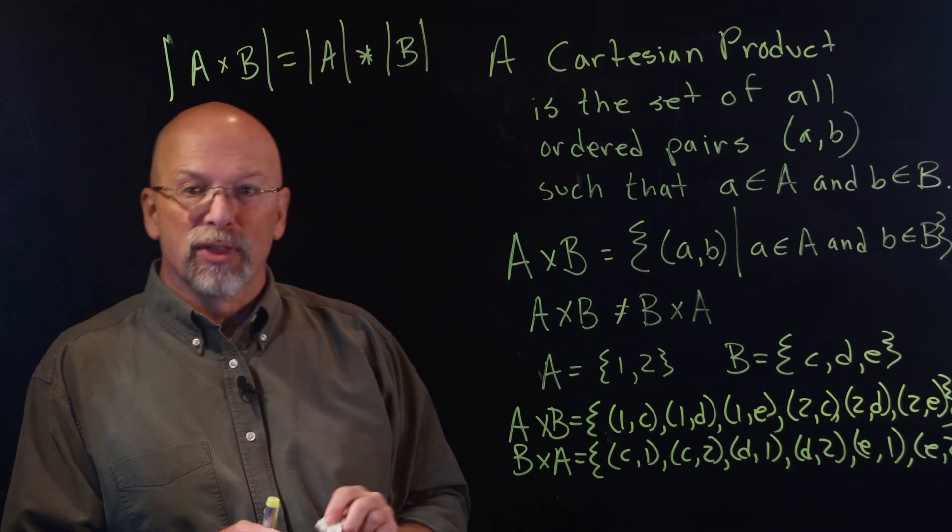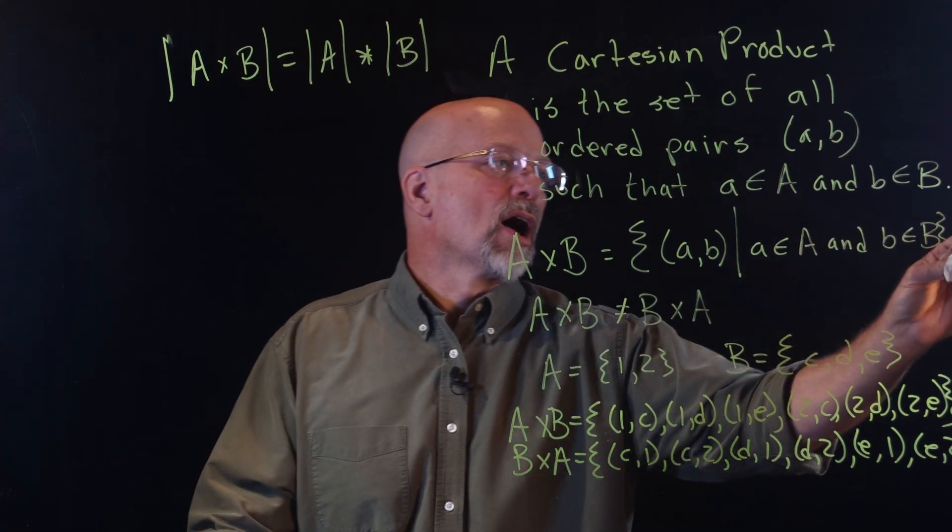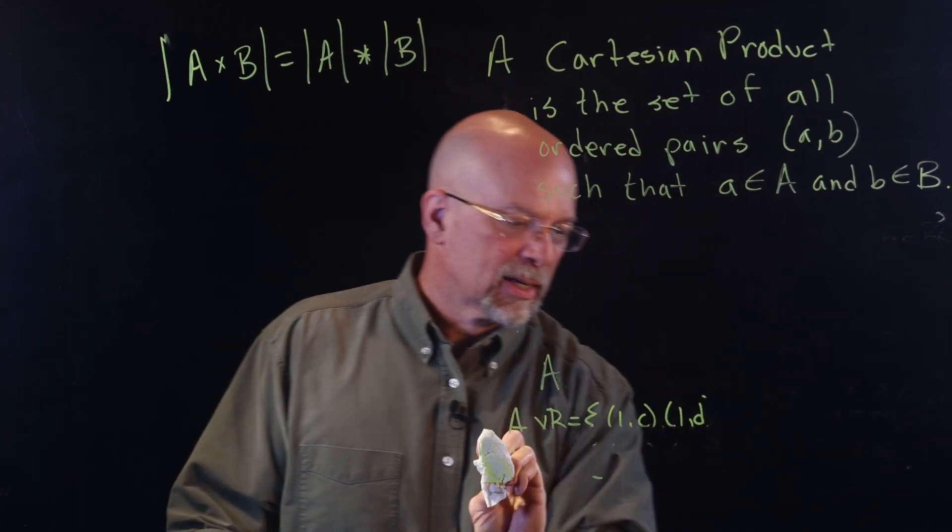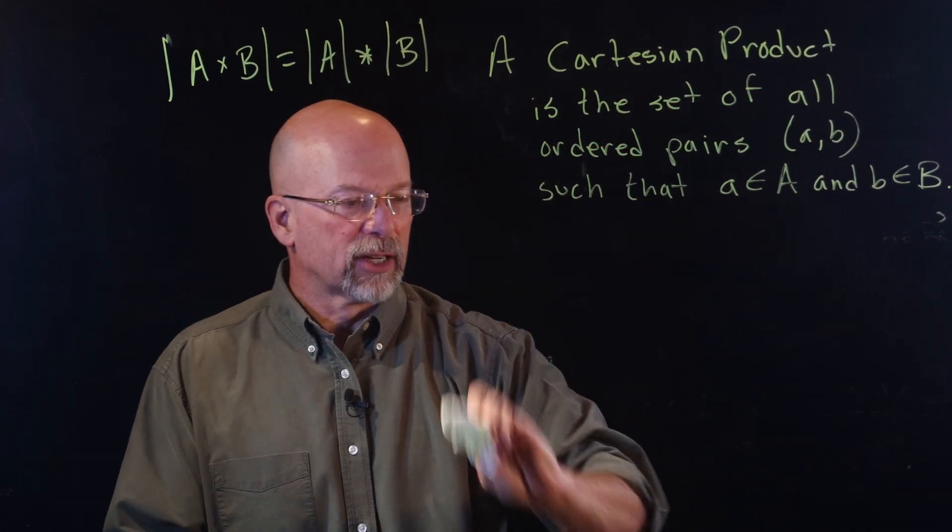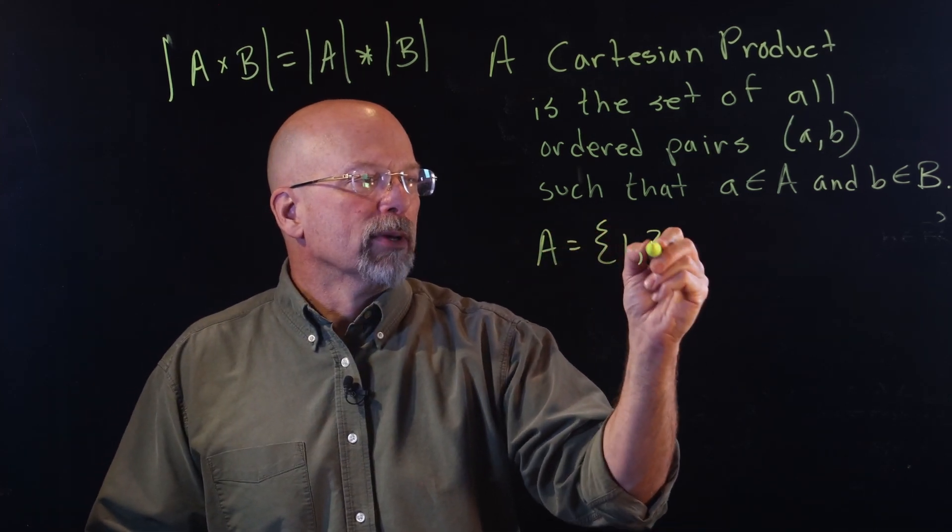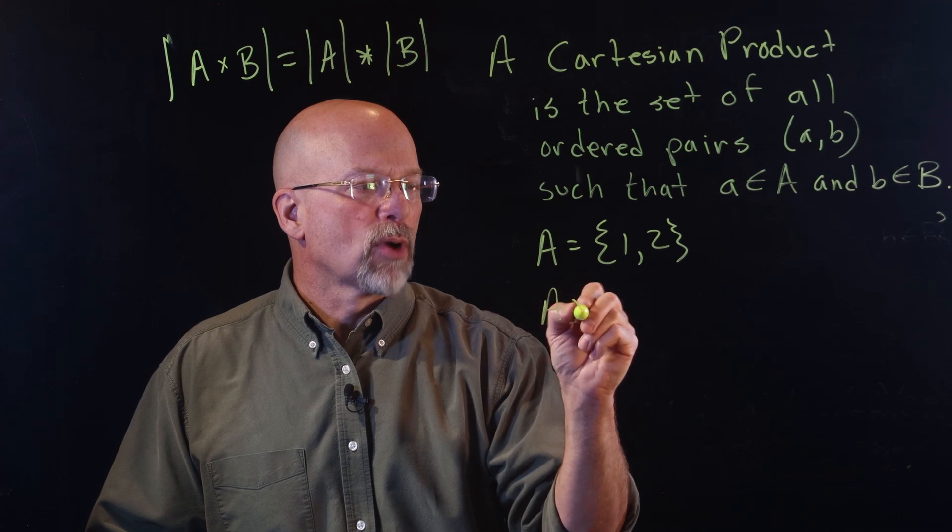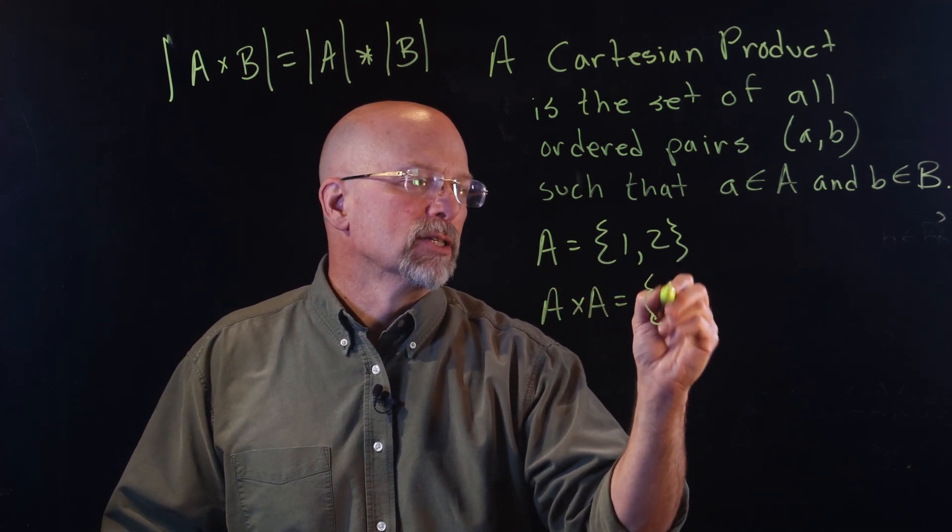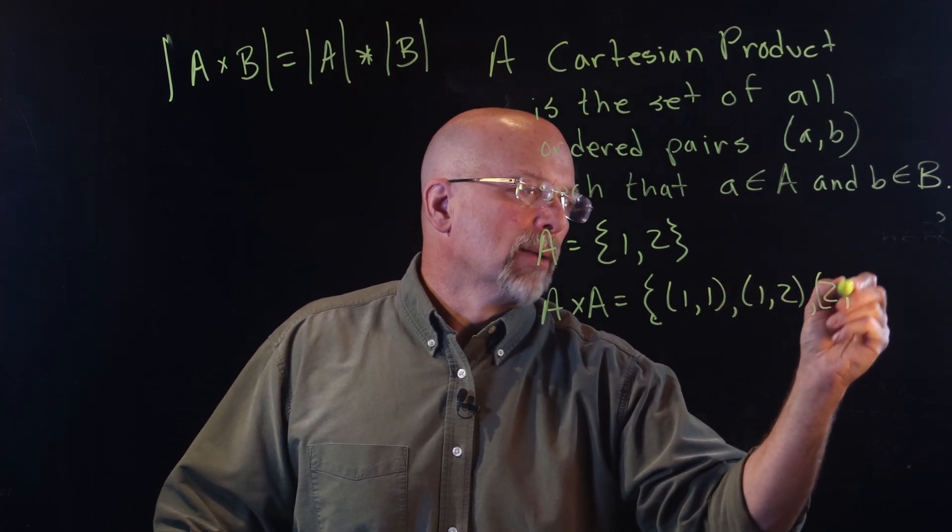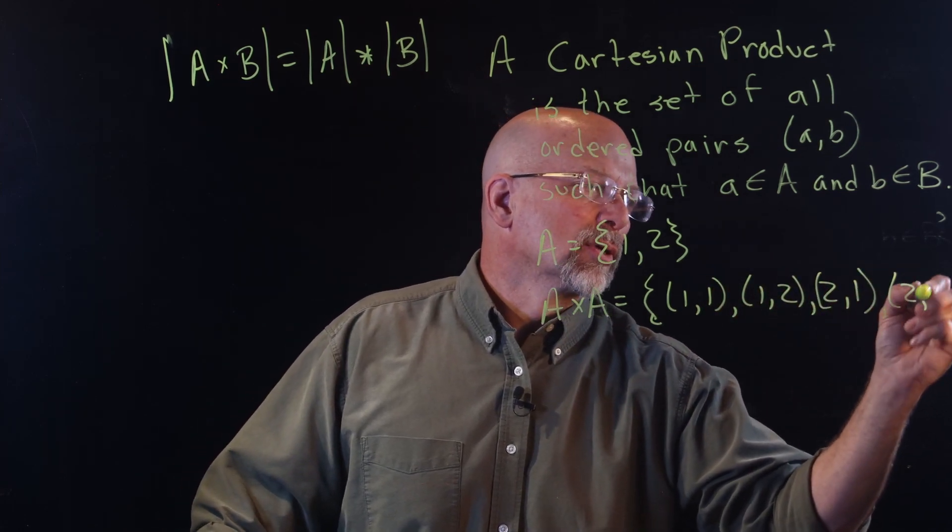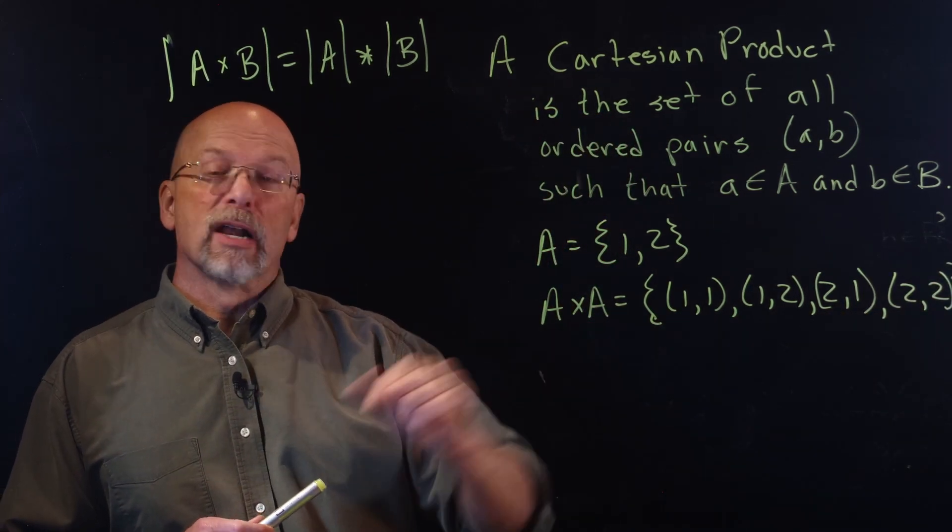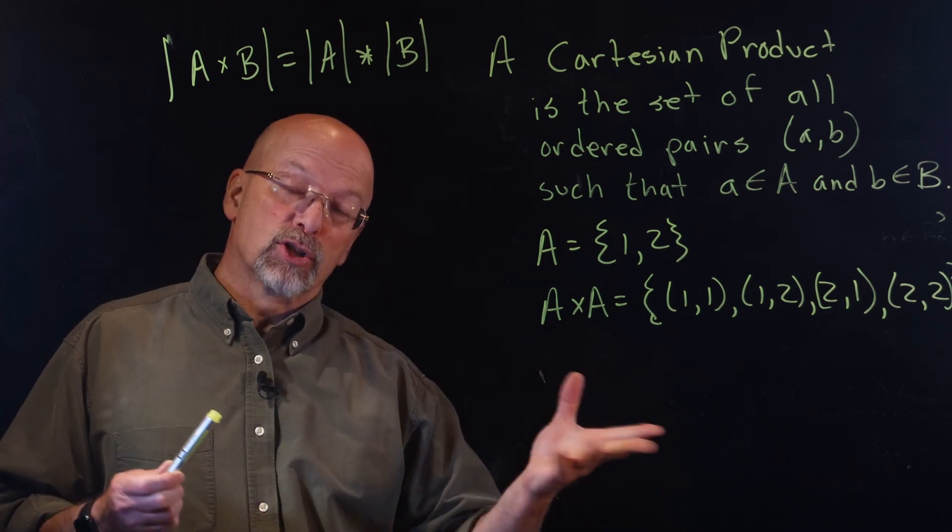Turns out you can also do things like take the cross product of two of the same set. So I could do in fact something like this. I could say A is equal to {1, 2}, then the cross product of A with itself is {(1, 1), (1, 2), (2, 1), and (2, 2)}. Now what was the cardinality of A? The cardinality was 2. What's the cardinality of A×A? Two times two, four.